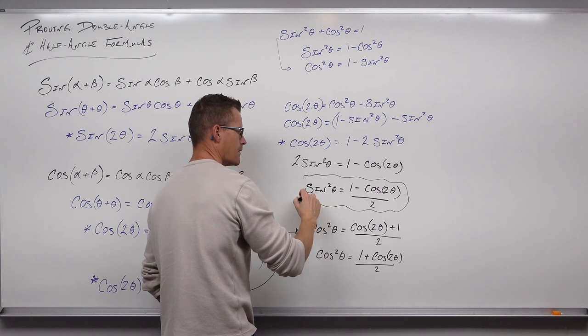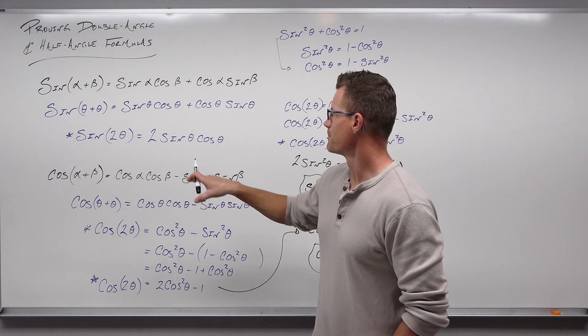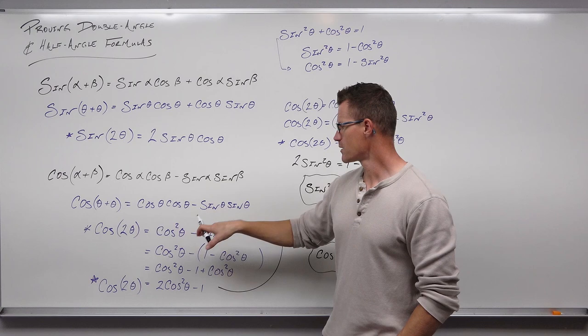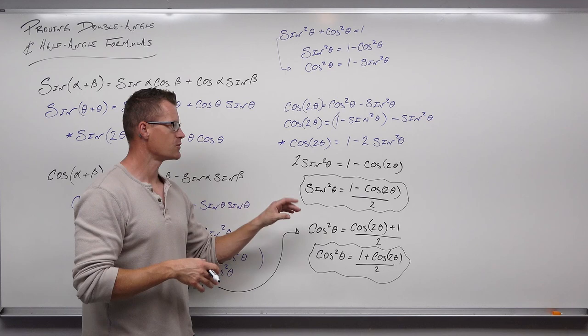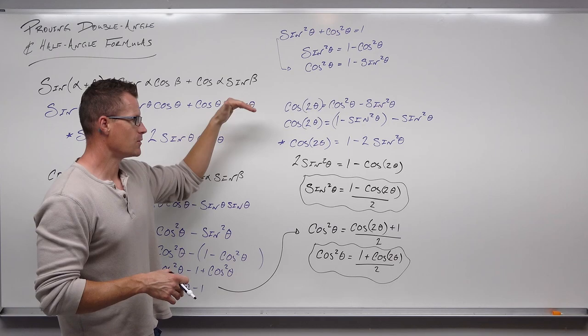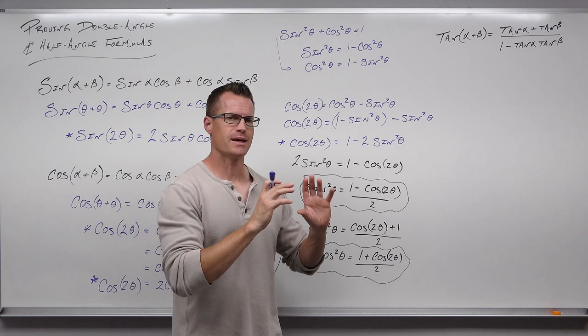So we now have several new identities or formulas: sine two theta equals two sine theta cosine theta, cosine two theta equals one of three equivalent things, plus those two solved identities for cosine squared and sine squared. That gives us six new formulas we can use, and we're about to create two more. Let's look at tangent.